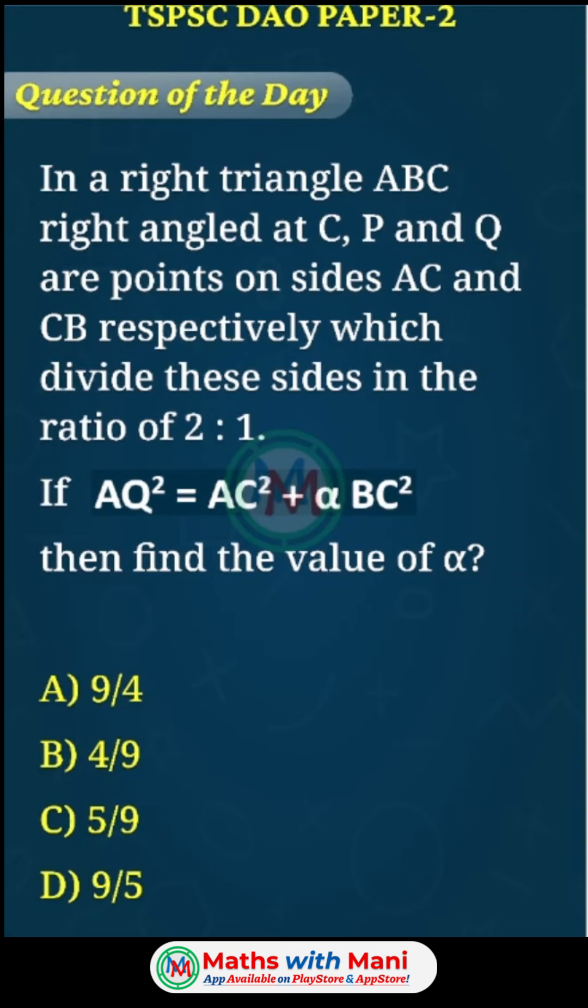Hi friends, welcome to the question of the day series. These problems are very important in competitive exams. In a right triangle ABC right angled at C, P and Q are points on sides AC and CB respectively which divide these sides in the ratio of 2:1. If AQ² = AC² + α BC², then find the value of α.